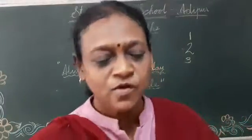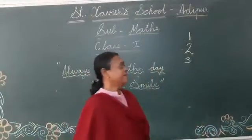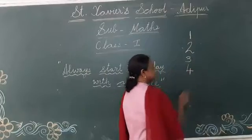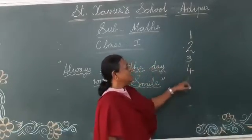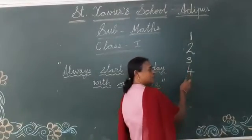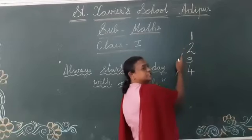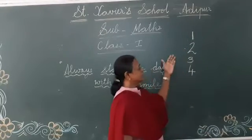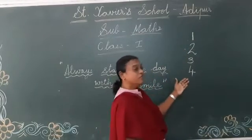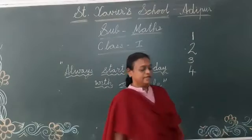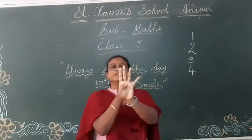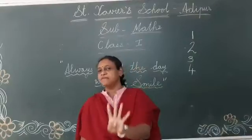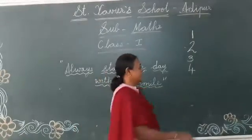Now, what is this? 4. How will you write 4? You know. Okay? 1, 2, 3 and 4. So, what comes after 3? 4. Okay? Count: 1, 2, 3 and 4. So, how many fingers am I having? 4. Okay?